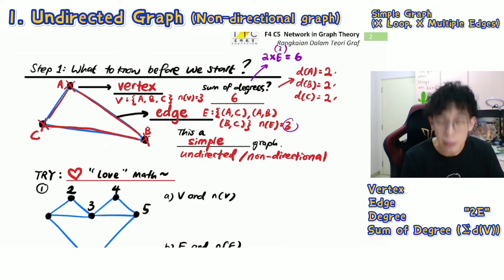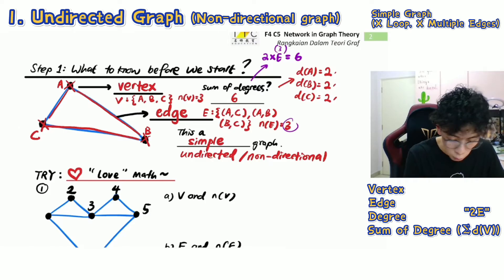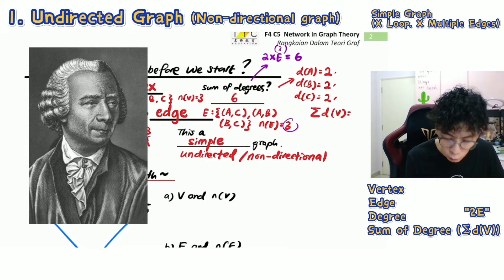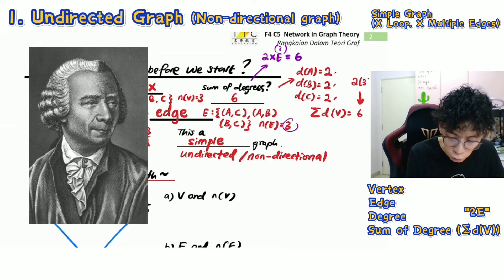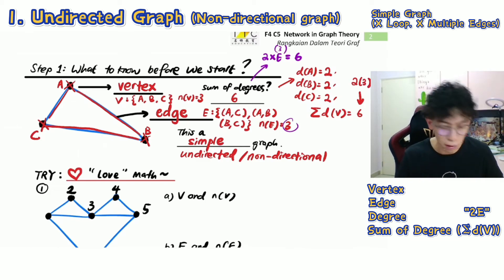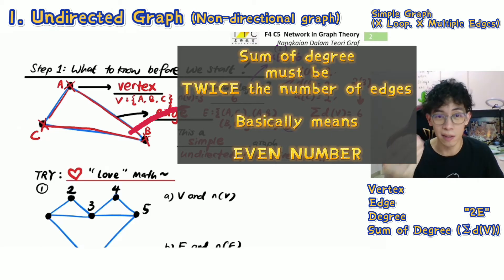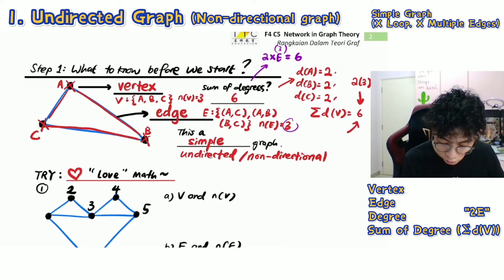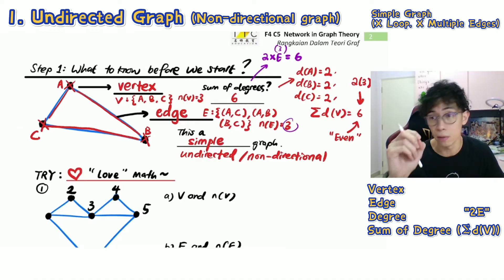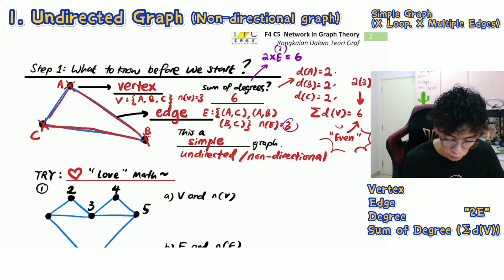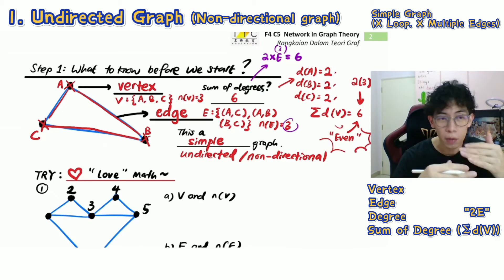Another way to present the sum of degrees: use the sigma symbol — Σ d(v) for all vertices v. The total is 6. You can use the formula 2 × edges to get the total directly. There is a very important message from Leonard Euler: in a graph, the sum of degrees must always be an even number. That's a key point.